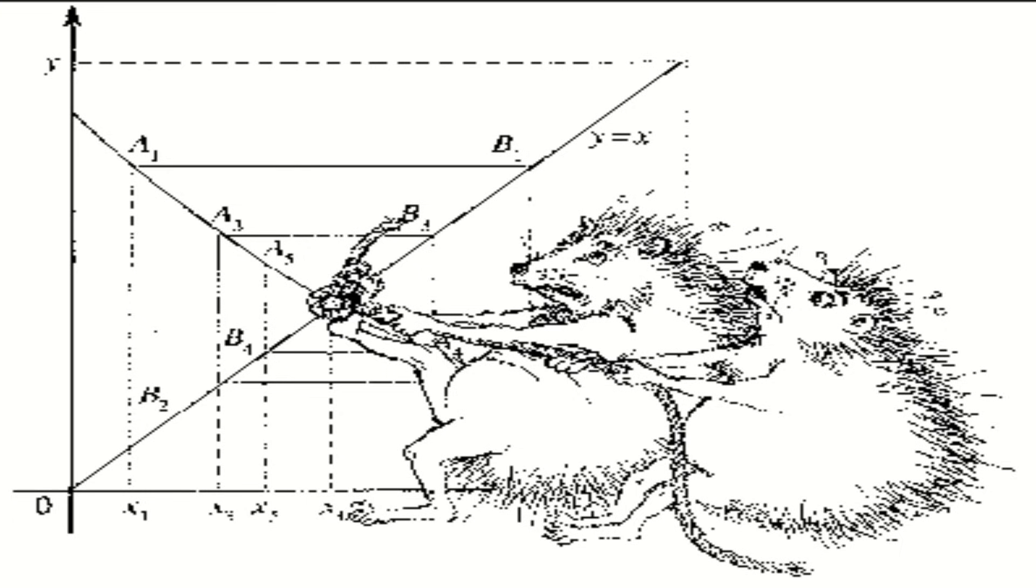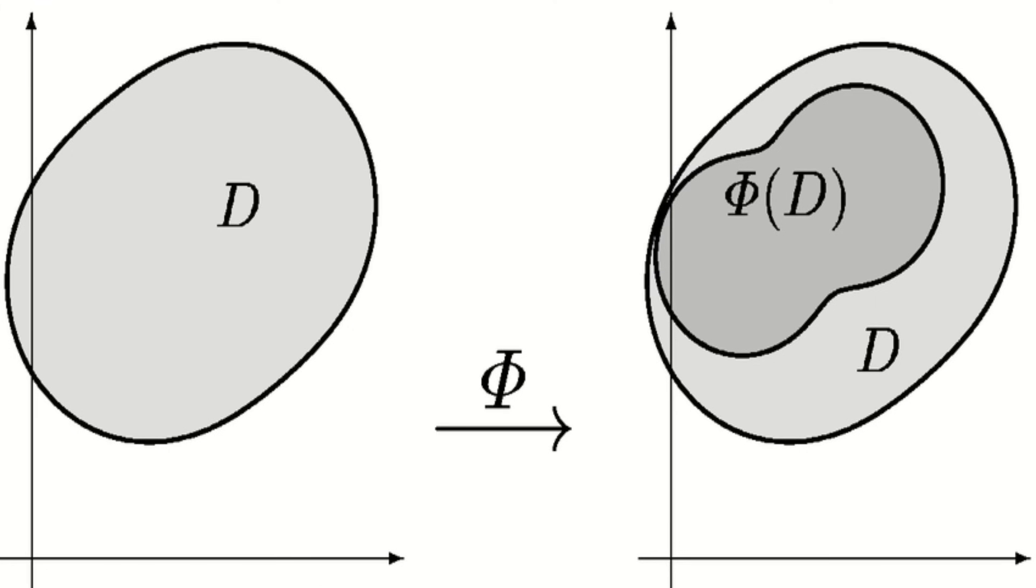Okay, this is the statement. Consider you had a disk in two dimensions, and you mapped the disk to itself in a continuous fashion. Well, then the theorem states that this map will always admit a fixed point.